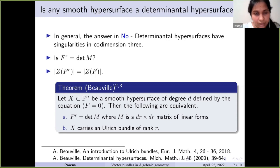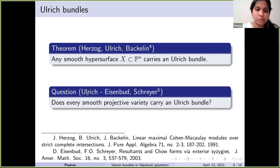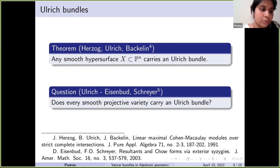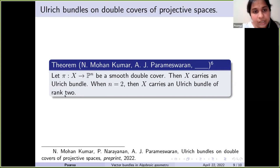This shows that Ulrich bundles have nice geometric intuition behind them. The central open question about Ulrich bundles — first posed by Ulrich and later by Eisenbud and Schreyer — is: does every smooth projective variety carry an Ulrich bundle? This is the question I have been working on for the past several years. Since a general answer for all projective varieties seems out of reach, people have been picking specific projective varieties and producing Ulrich bundles over them. One recent result I obtained in collaboration with Mohan Kumar from Washington University and A.J. Parameswaran is as follows.